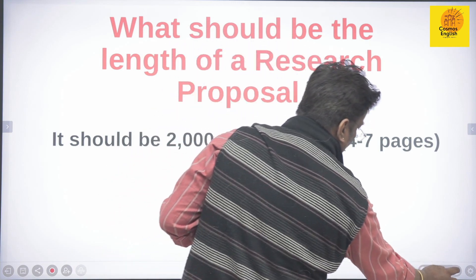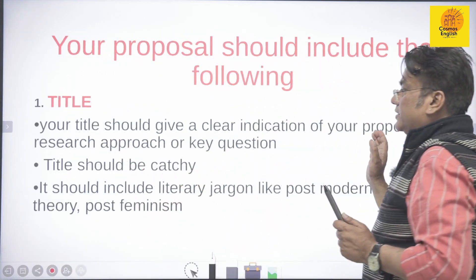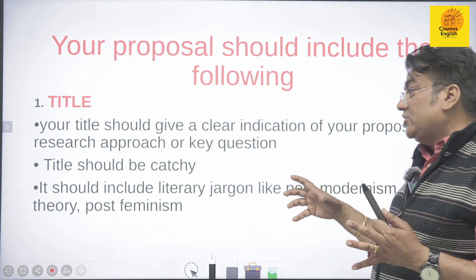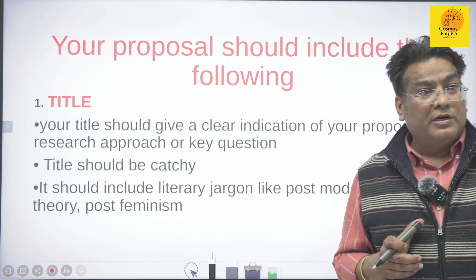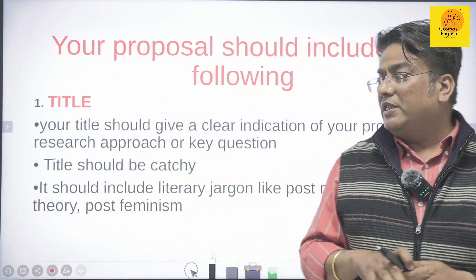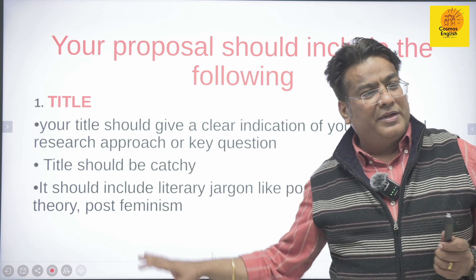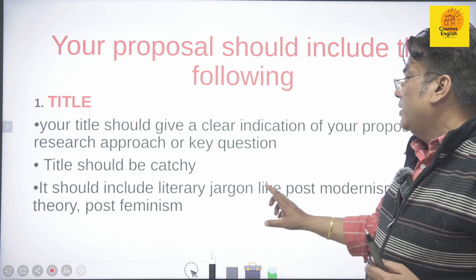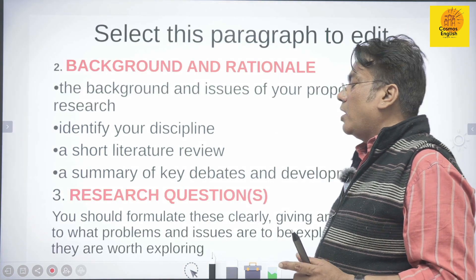The third element is the title. The title should be very clear and tell about your proposal, its research approach, and your key question. It should be catchy and include literary jargon. Literary jargon means terms like post-colonialism, post-apocalyptic, formalism, post-modernism, queer theory, post-feminism. For example, you cannot just say LGBTQ community — you should say the topic falls in the category of queer theory. If you don't have literary jargon, it means you are not part of the research community.